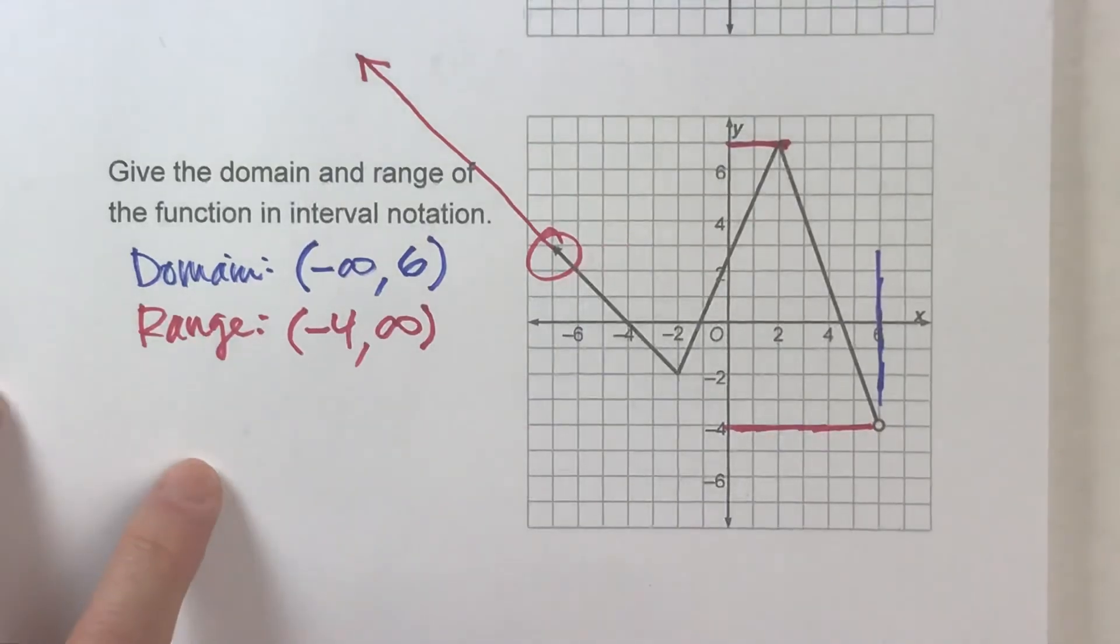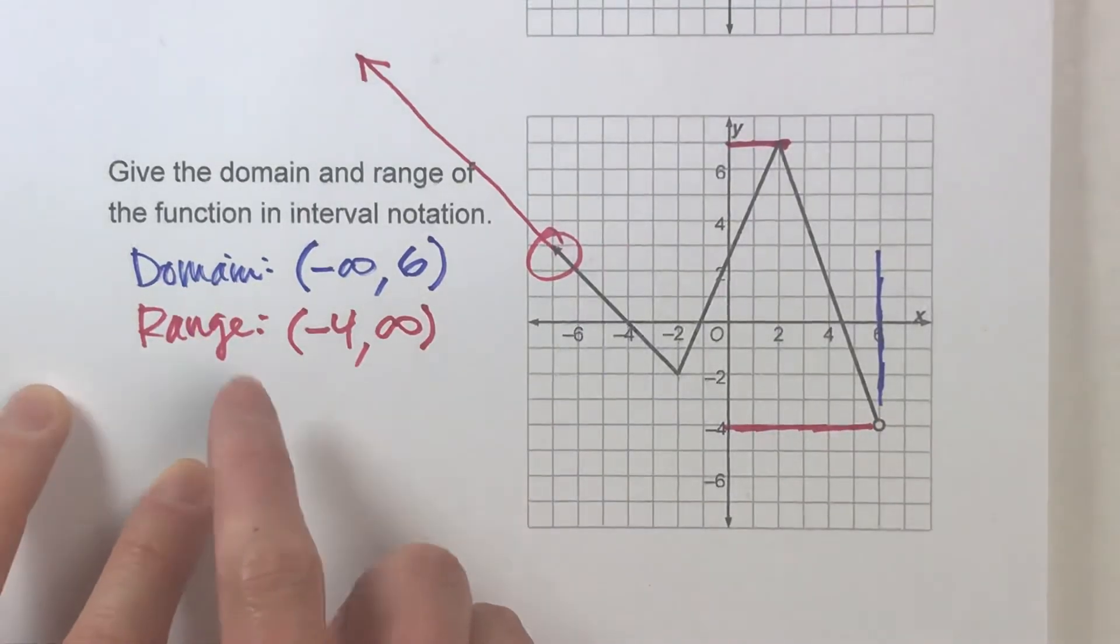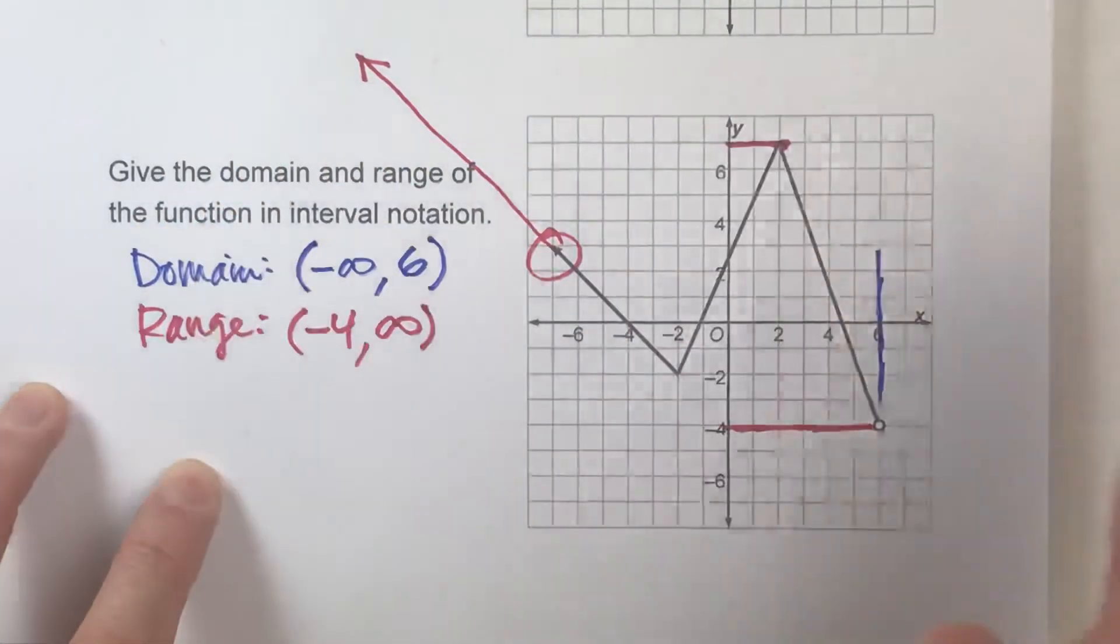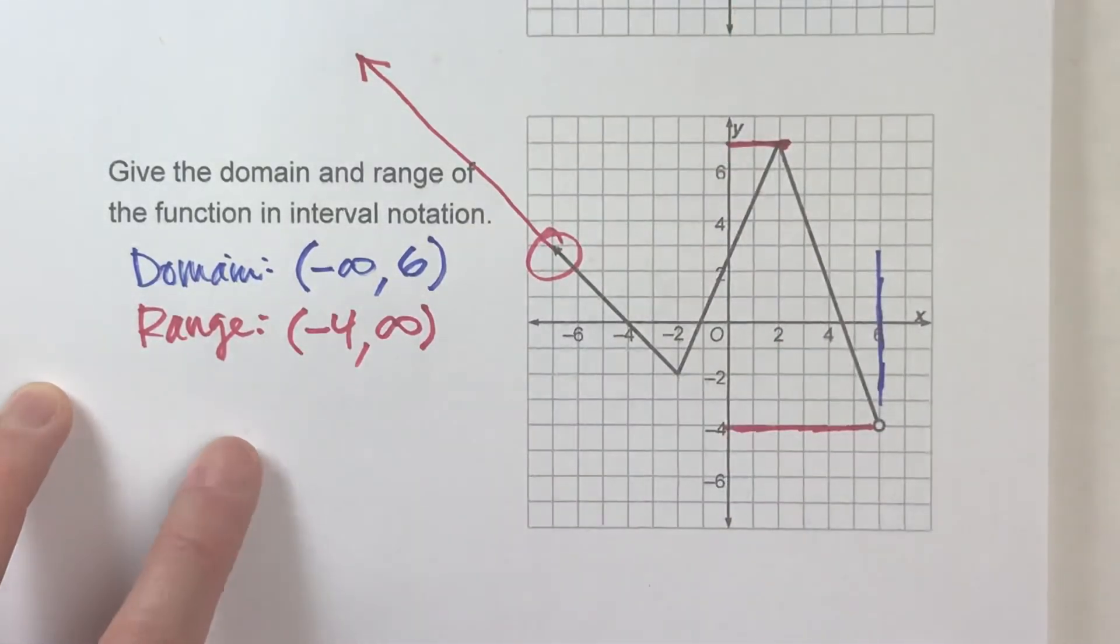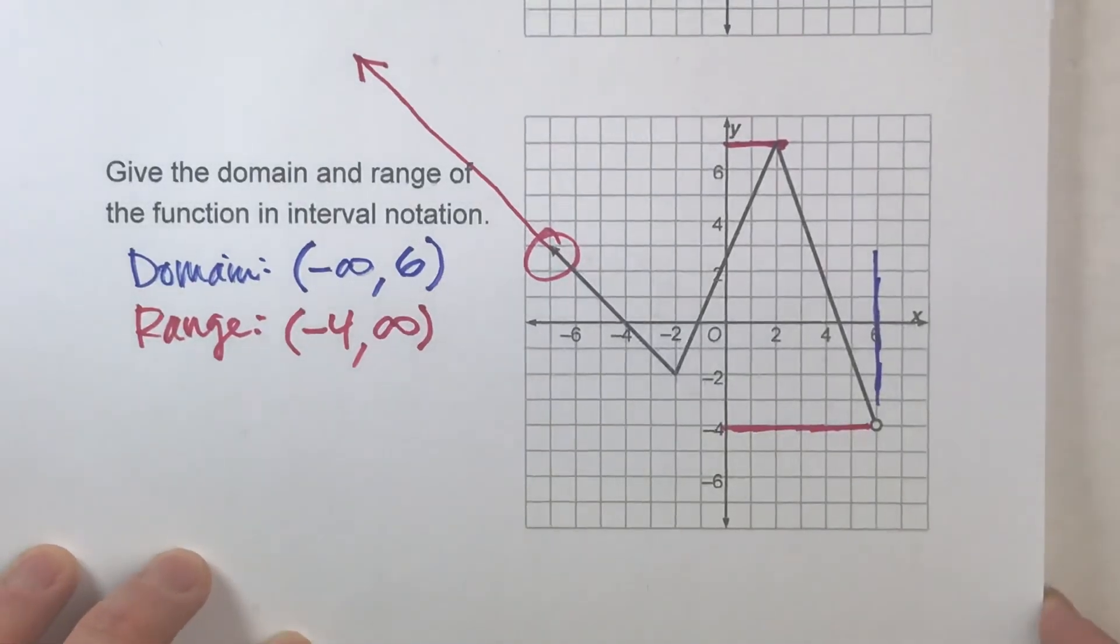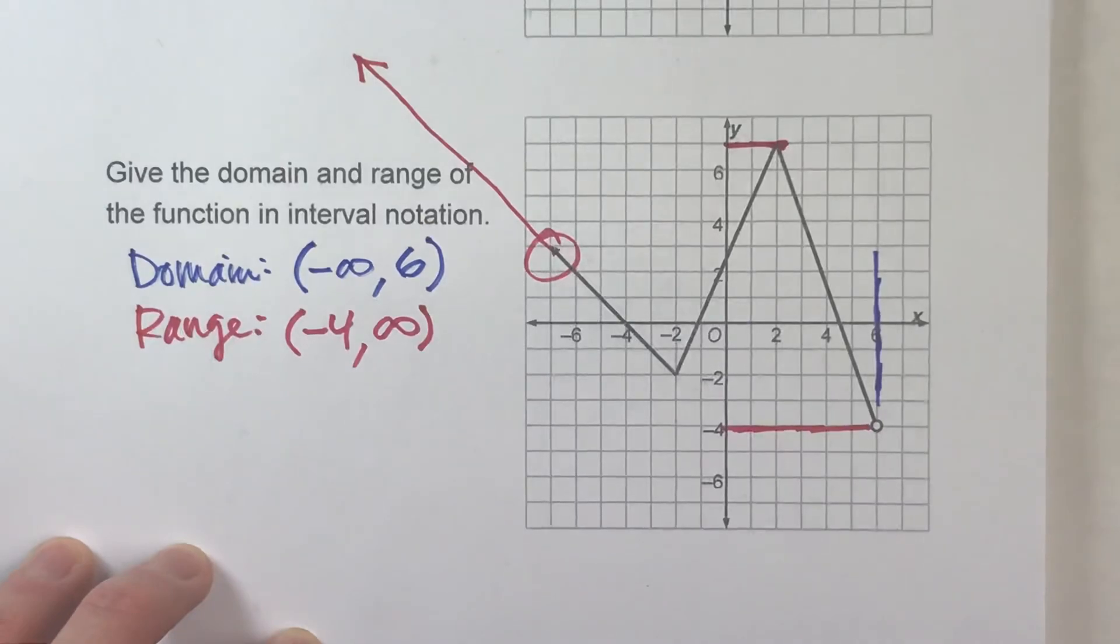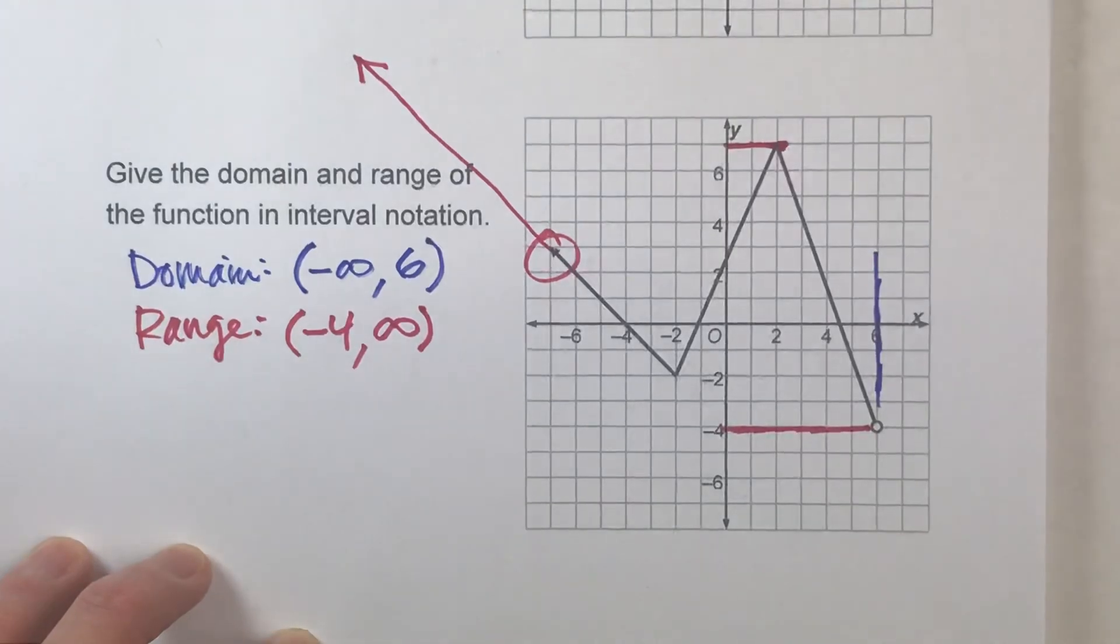So the key to domain and range is to really focus on one thing at a time. For domain, focus on the side to side. For the range, focus on the up and down. And pay attention to those arrows. That will trip you up every time. So hopefully you found this video helpful. If you did, please hit that like button. Also, subscribe because it really helps us out. But with that being said, good luck on your math. And I will see you next time.